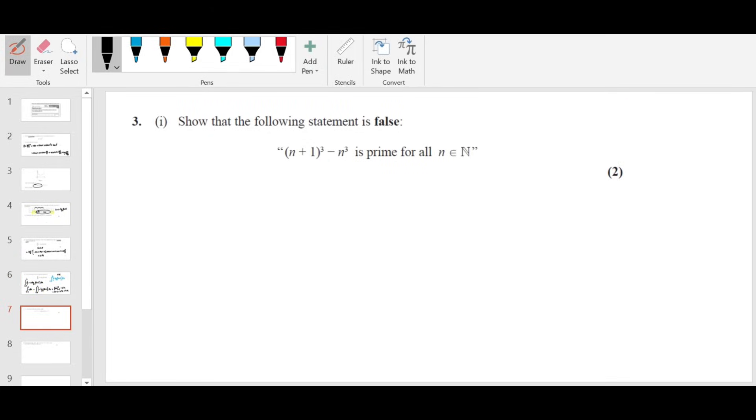Question number 3 now. Show that the following statement is false. So whenever they ask you to prove that the following statement is false, you need to use counter example. For all n belongs to N, that means for all natural numbers, this expression is prime, they say. So I'm going to take a natural number 1. Then I sub in here, it's 1 plus 1 whole cube minus 1 cube, which is 2 cube minus 1 cube. Of course, it's a prime, but we need to prove that it's not a prime.